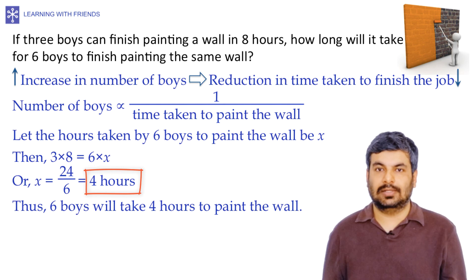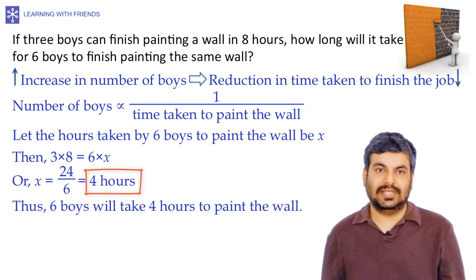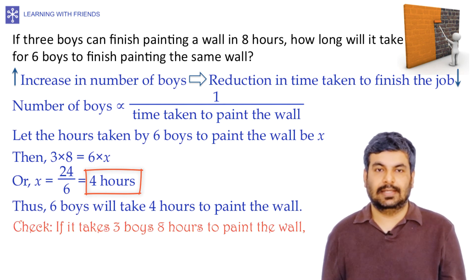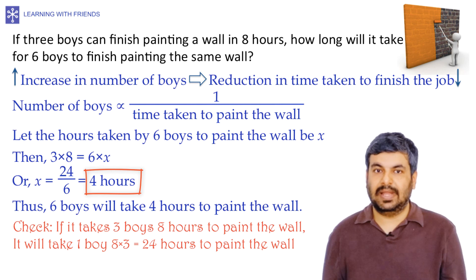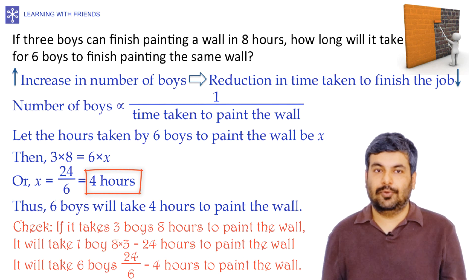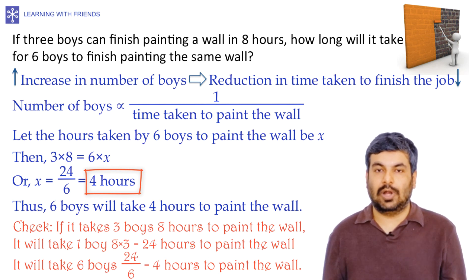Quick check: If it takes 3 boys 8 hours, it takes 1 boy 8 × 3 = 24 hours to paint the wall. Therefore, 6 boys will take 24 / 6 = 4 hours — confirmed.